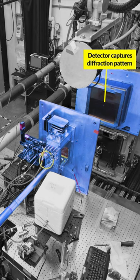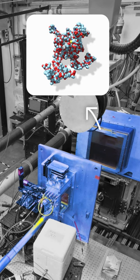A specialized detector captures that pattern after each flash, which scientists use to create step-by-step snapshots, revealing the positions of atoms and molecules at different times.